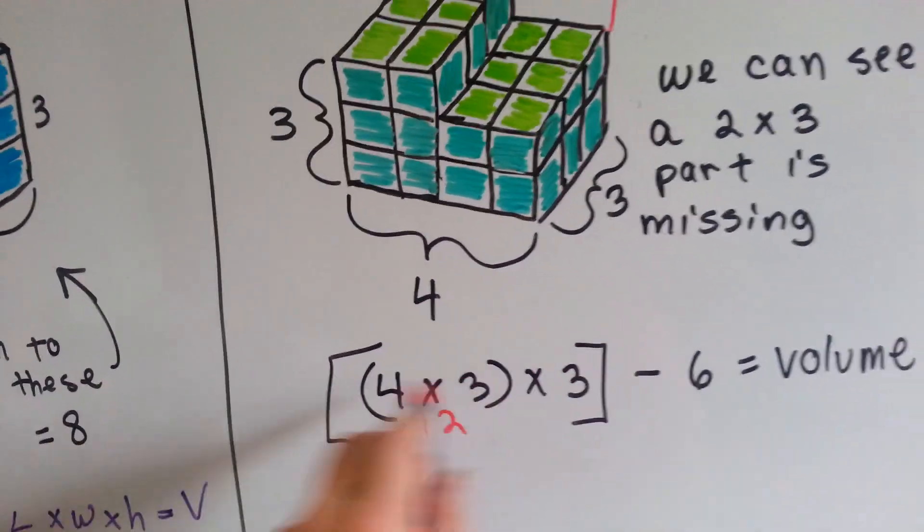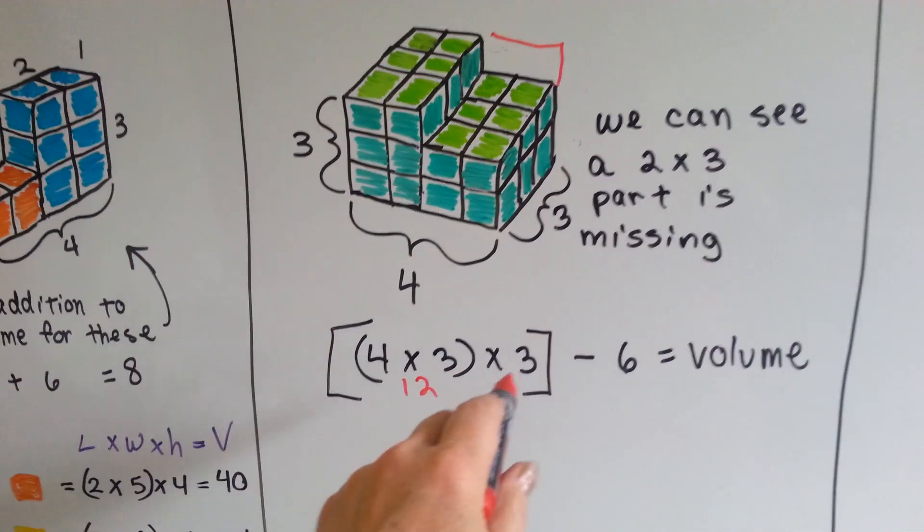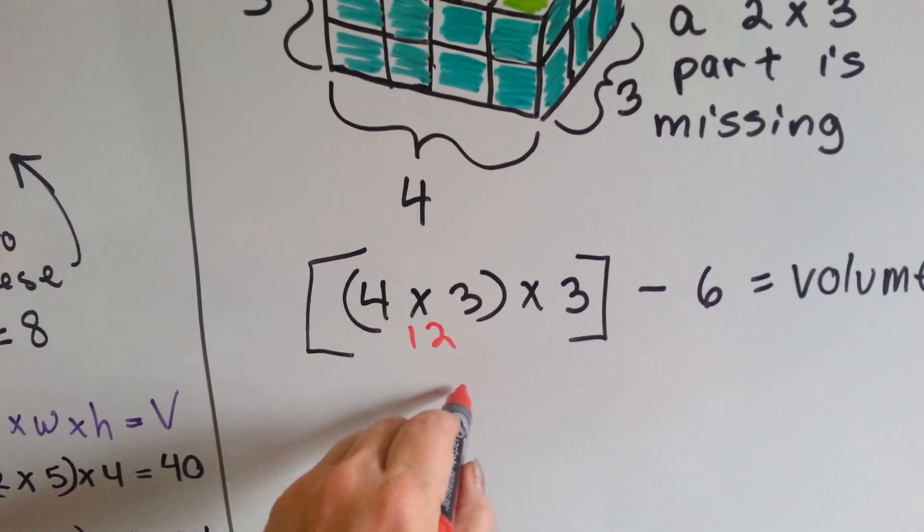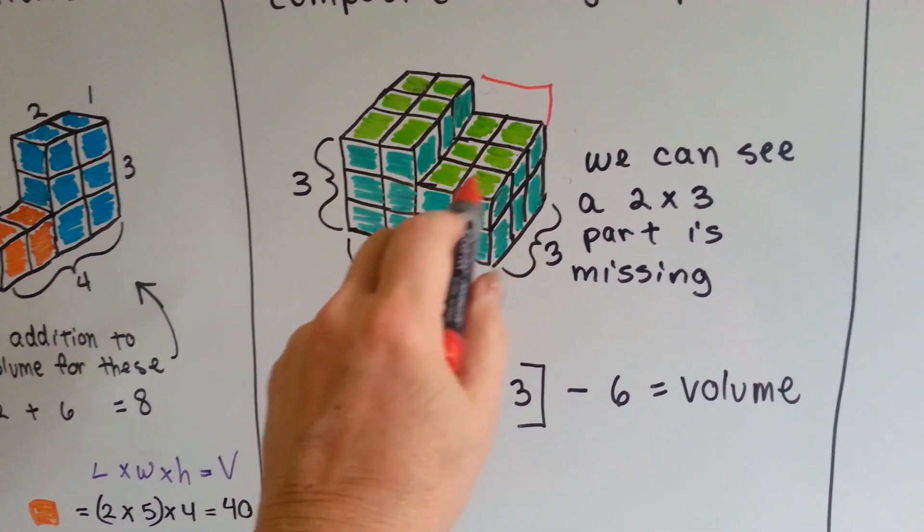See my nice order of operations equation here? Then we multiply it by the height, which is 3. 12 times 3 is 36. And then we subtract the ones that are missing. We can see 6 are missing.